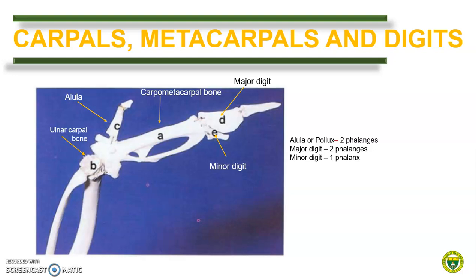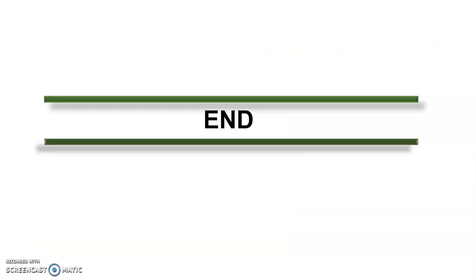A great modification is seen in birds. The carpus consists of only two bones — the ulnar carpal bone and the radial carpal bone. The distal row of carpal bones fused with the metacarpal bone forming the carpometacarpal bone. In terms of the digits, birds have only three digits. The first digit, called the alula, bears two phalanges. The second, called the major digit, bears two phalanges. And finally, the minor digit bears only one phalanx. That ends our discussion on part three of module one. You may now proceed to part four, where we will compare the bones of the pelvic limb of different domestic animals.